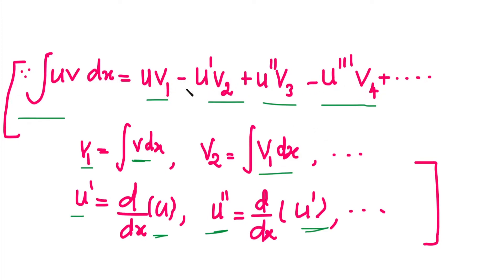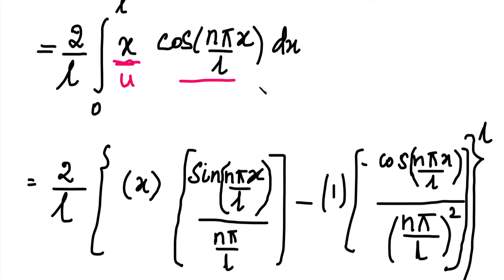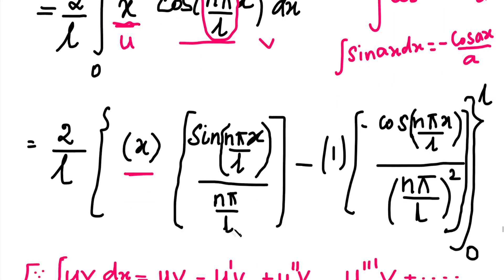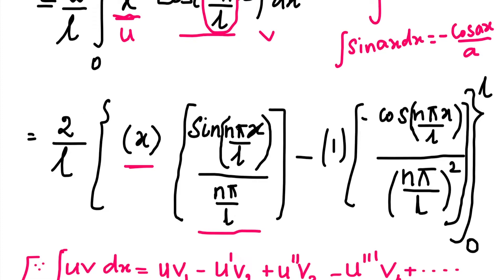We integrate the second function in each term. The first function u equals x, and the second function is cos(n*pi/L * x). We know that integral of cos(a*x) equals sin(a*x)/a, so v1 equals sin(n*pi*x/L) divided by (n*pi/L). The next term is minus u' times v2. Since u equals x, u' equals 1. The integral of sin(a*x) equals minus cos(a*x)/a, so v2 equals minus cos(n*pi*x/L) divided by (n*pi/L).